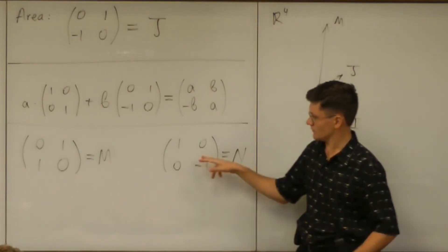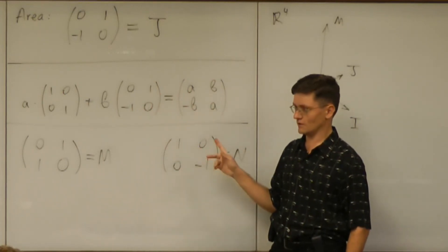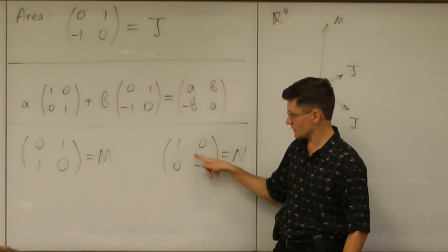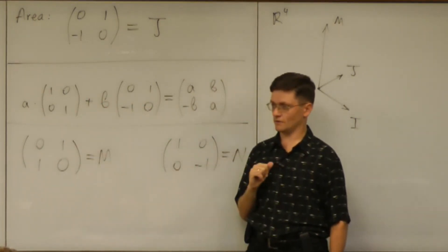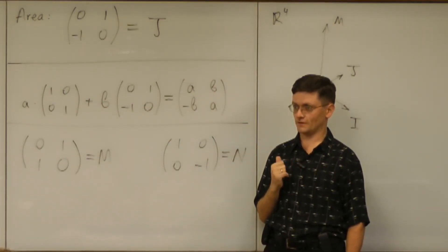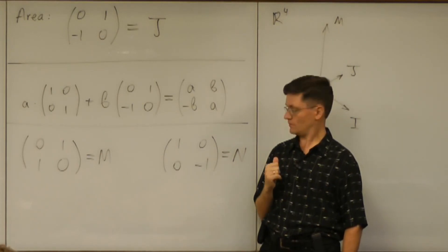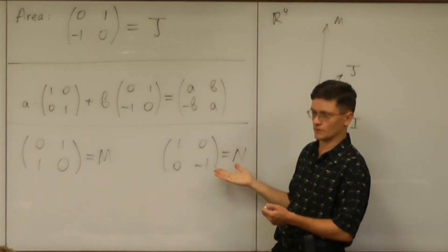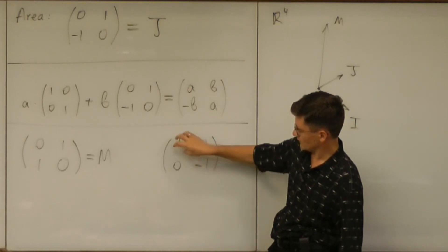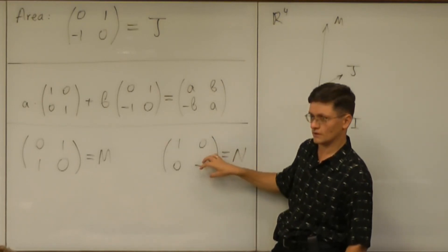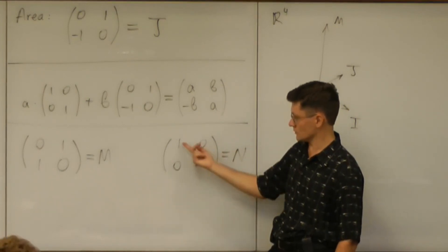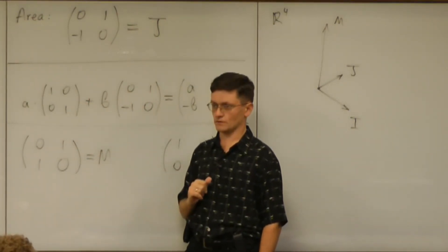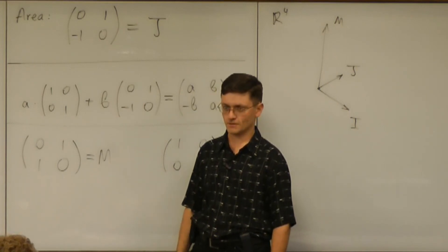Well, you see, the beauty of this choice is that we immediately know that this matrix cannot be expressed as a combination of these three. Right? Why is that? Because the feature of this matrix is that the entries on diagonal are opposite of each other. Right? Can you make those entries opposite using any of these three matrices? No. No. That's it.